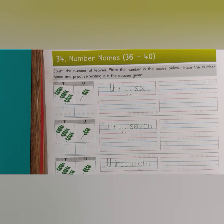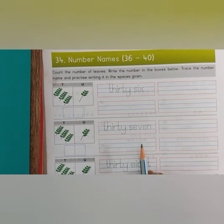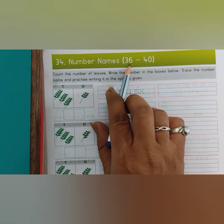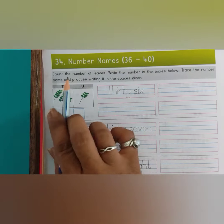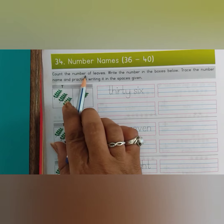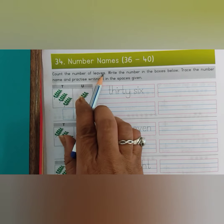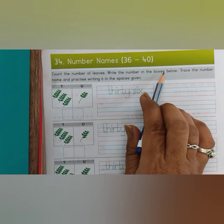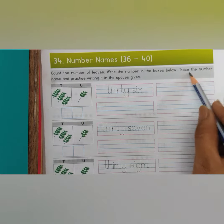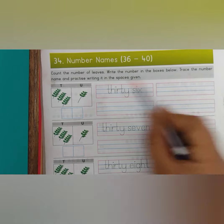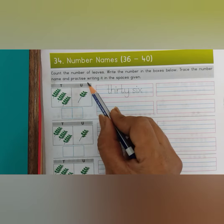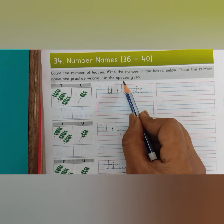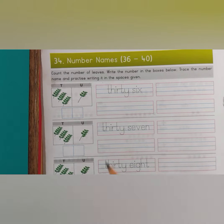Hello children. Today we are going to learn number names 36 to 40. Count the number of leaves. Write the number in the boxes below. Trace the number name and practice writing it in the spaces given.